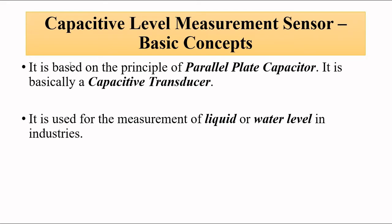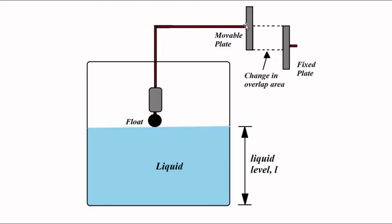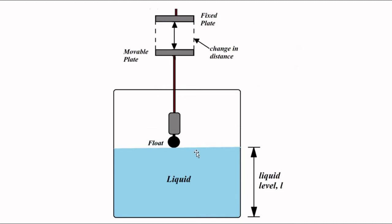The basic principle of liquid level measurement with a capacitive sensor is that it operates on the principle of a parallel plate capacitor, and it is used in industries for the measurement of liquid and water level. The basic setup involves a capacitive sensor connected to a float, which is placed floating on the surface of the liquid in a tank or container. There are two arrangements in which it can be connected.